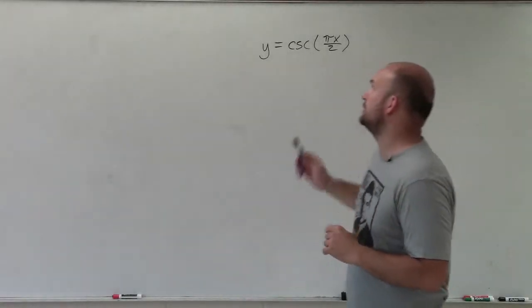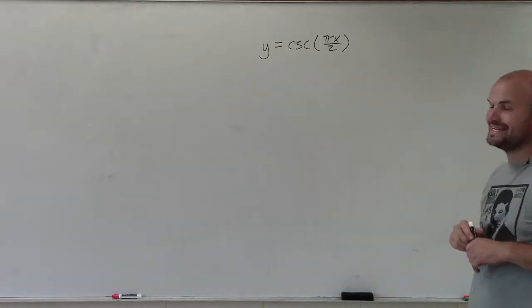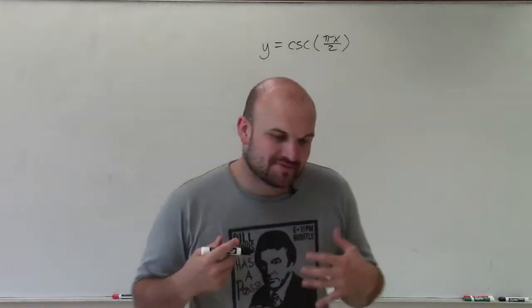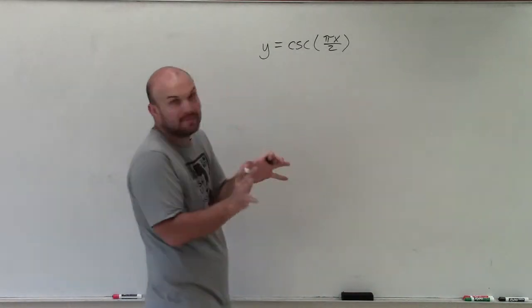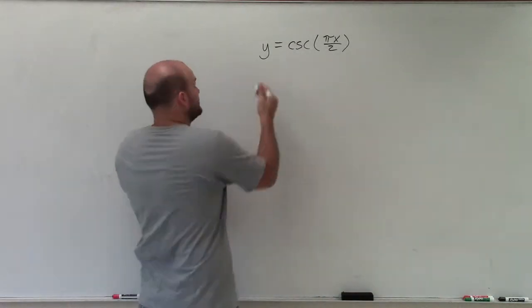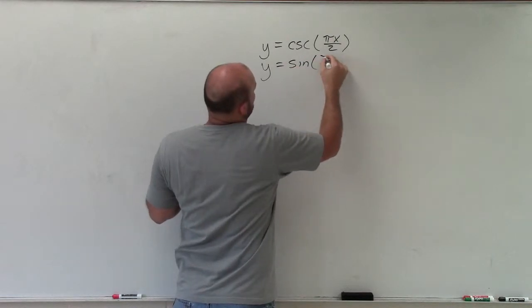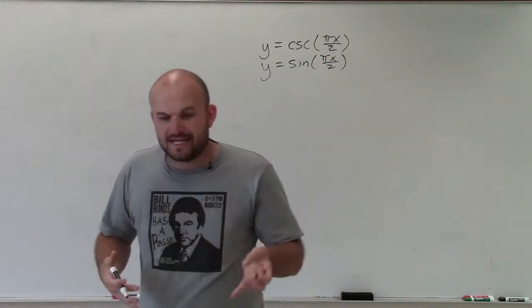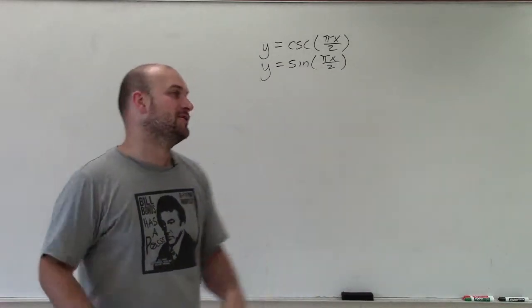Welcome, ladies and gentlemen. What I'd like to do is show you how to graph y equals cosecant of pi x divided by 2. Whenever we're graphing the cosecant function, we want to stop, forget about the cosecant function, and graph the sine function of the exact same. Because all we're simply going to do is graph sine, and then create some asymptotes and go in opposite directions, and we're done.